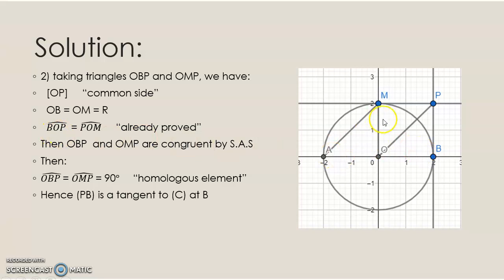Angles POB and POM were already proved equal. Then triangles OBP and OMP are congruent by Side-Angle-Side. Therefore, angles OBP and OMP equal 90 degrees as homologous elements.